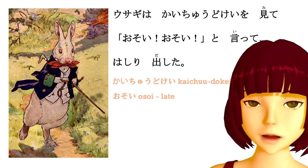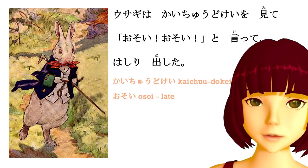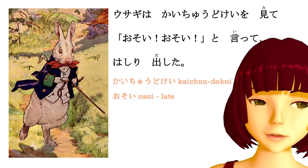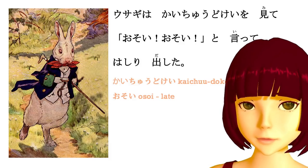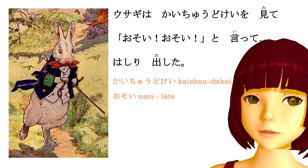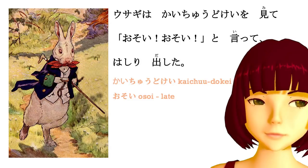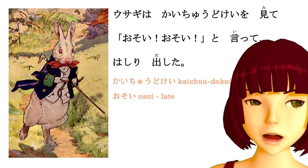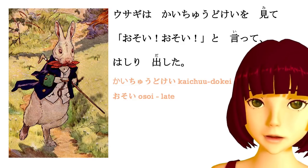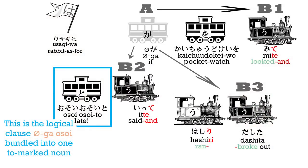We don't need to repeat usagi-wa this time because we have it at the beginning of the sentence. This is a compound sentence, so the second half shares the same subject as the first half. And that itte is another compound, making this a three-deep compound sentence: the rabbit looked at his watch, said I'm late, I'm late, and then did something else.